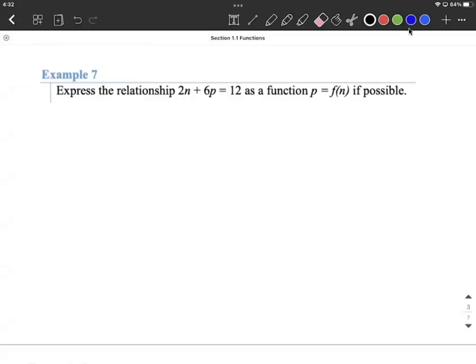In this example, we're given an equation, a relationship, 2n plus 6p equals 12, and asked to write this as a function where p equals f of n, if that's going to be possible.